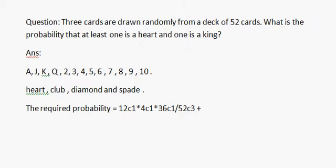The probability is 12c2 × 4c1 / 52c3. 12c2—from 12 cards we take two heart cards. And from total 4 king cards we take one card. And from total 52 cards we take three cards.